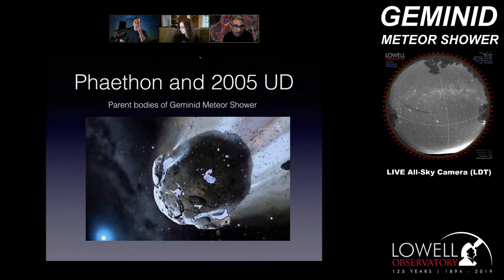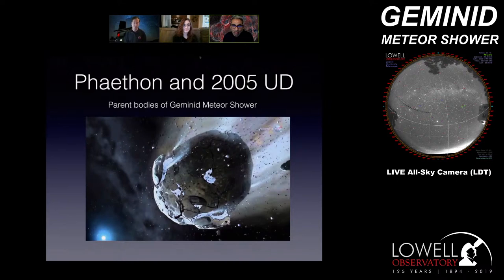So this evening we're going to look at how the Geminid meteor shower forms and its relationship with a few of the asteroids in the inner solar system. My talk is going to be about Phaethon and 2005 UD, parent bodies of the Geminid meteor shower.